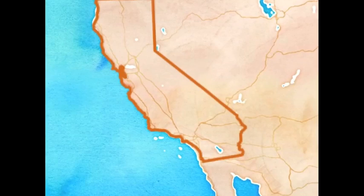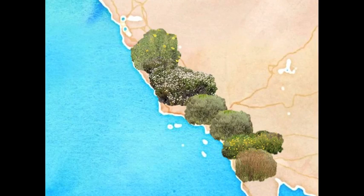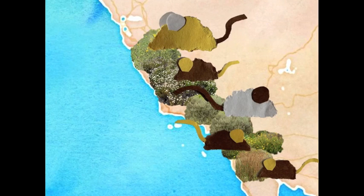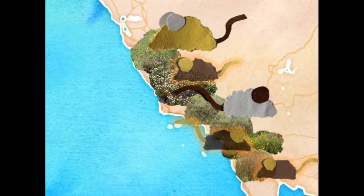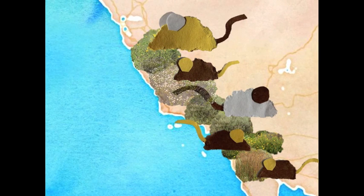Until relatively recently, the coastline of Southern California was covered in coastal sage scrub. This habitat was home to many different animals, and some of them, like the Pacific pocket mouse, specialize in the coastal environment and do not live anywhere else.